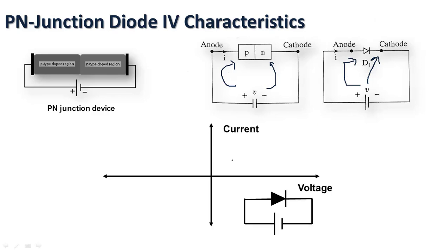In forward biased condition, as voltage varies, the current increases slowly. Once it reaches the cutoff voltage, generally called the knee voltage, which is 0.7V for silicon material and 0.3V for germanium, the behavior changes.